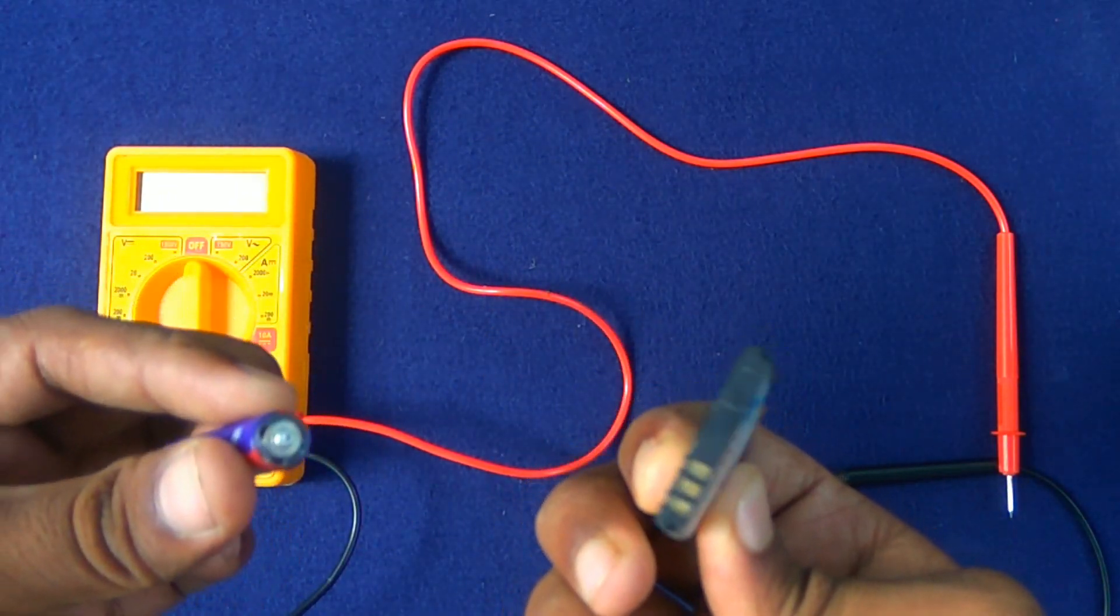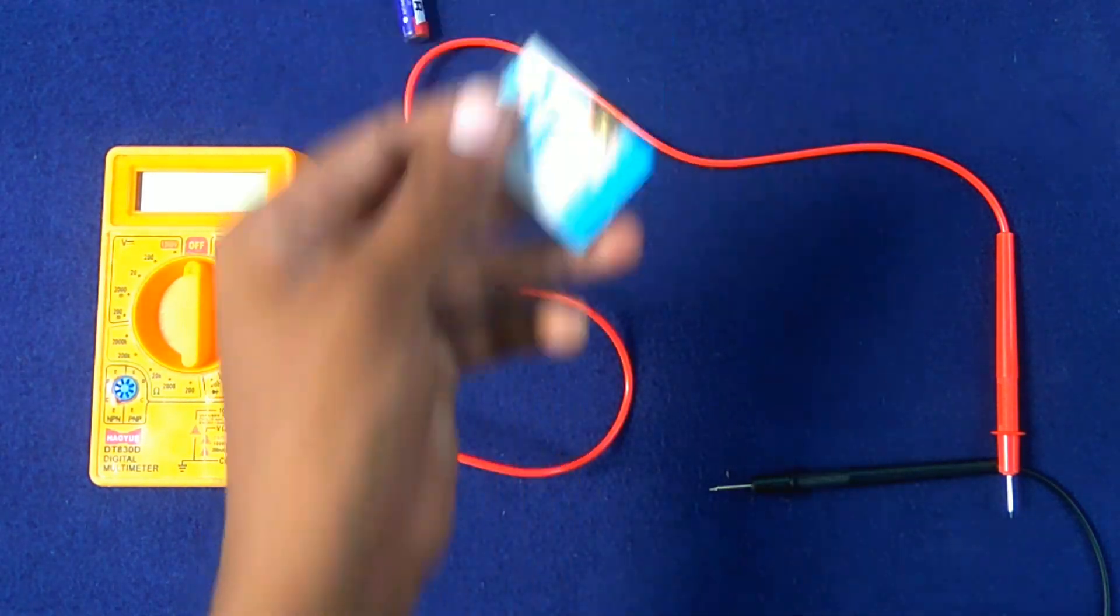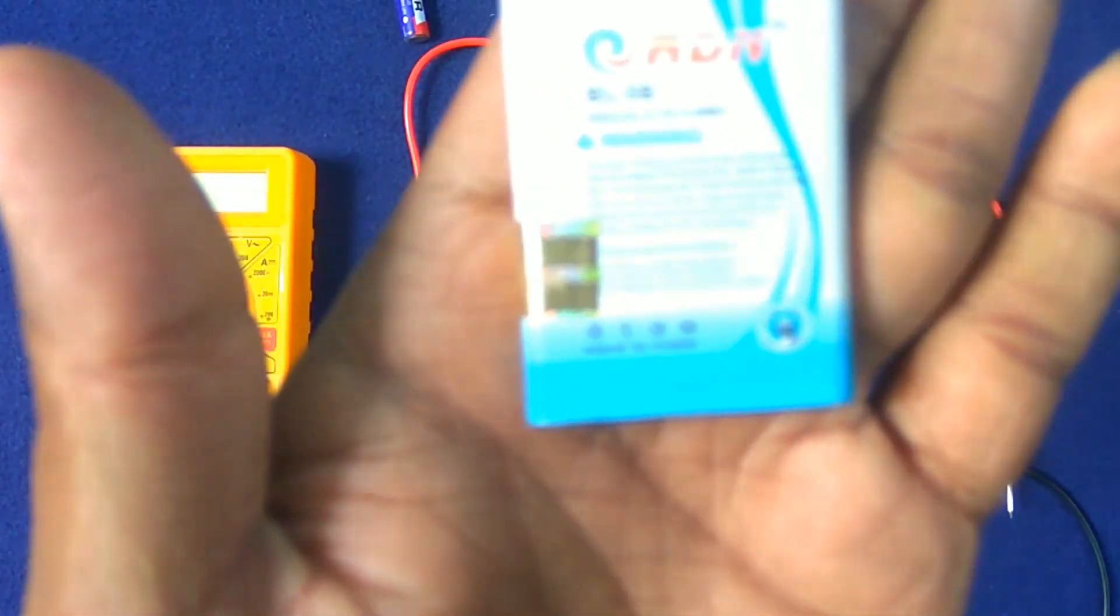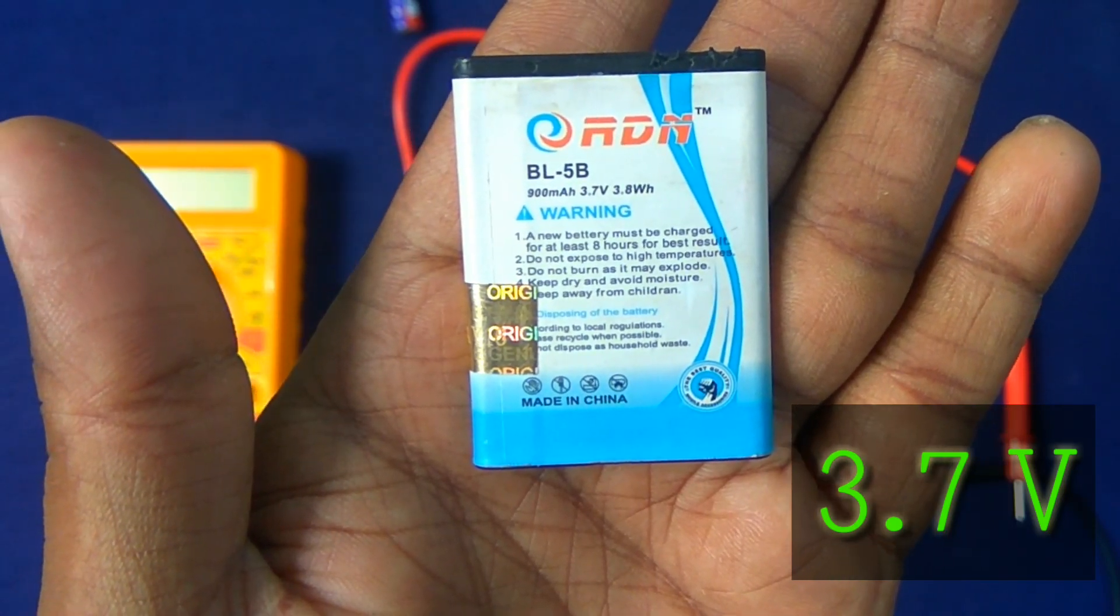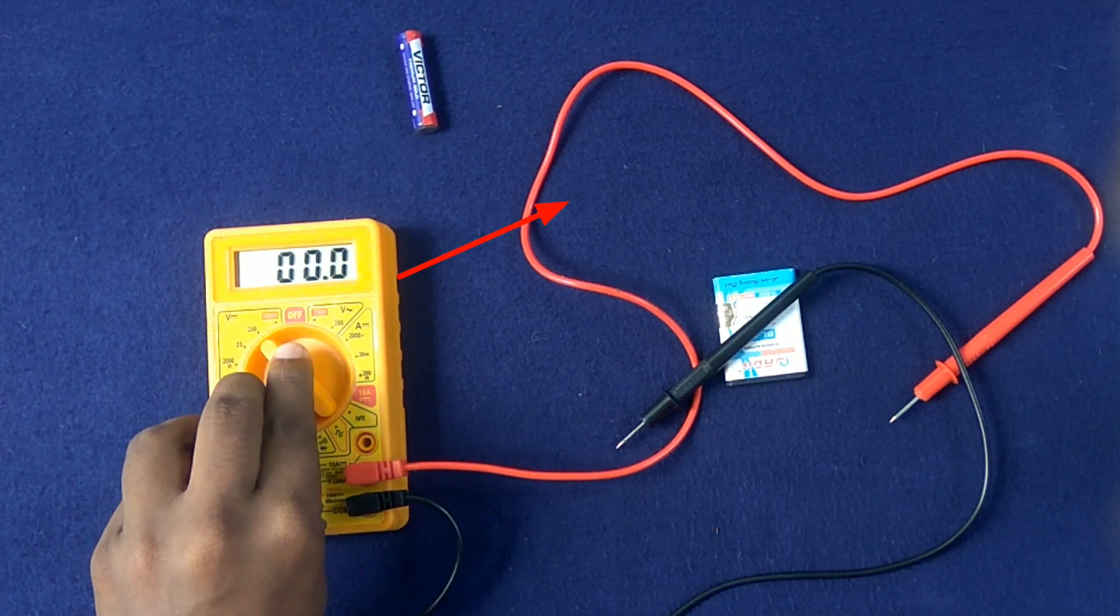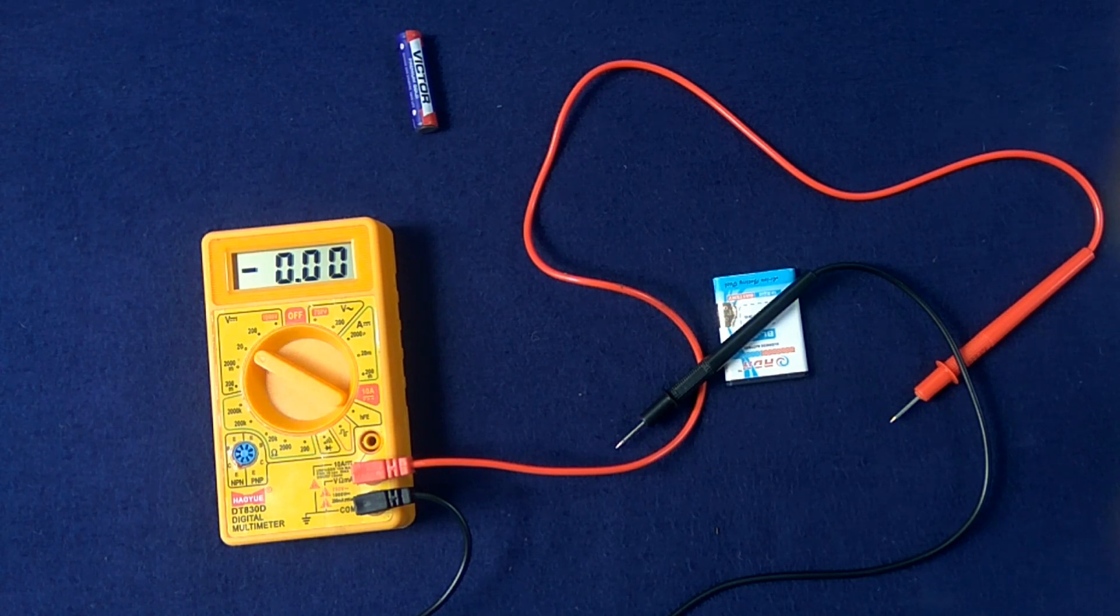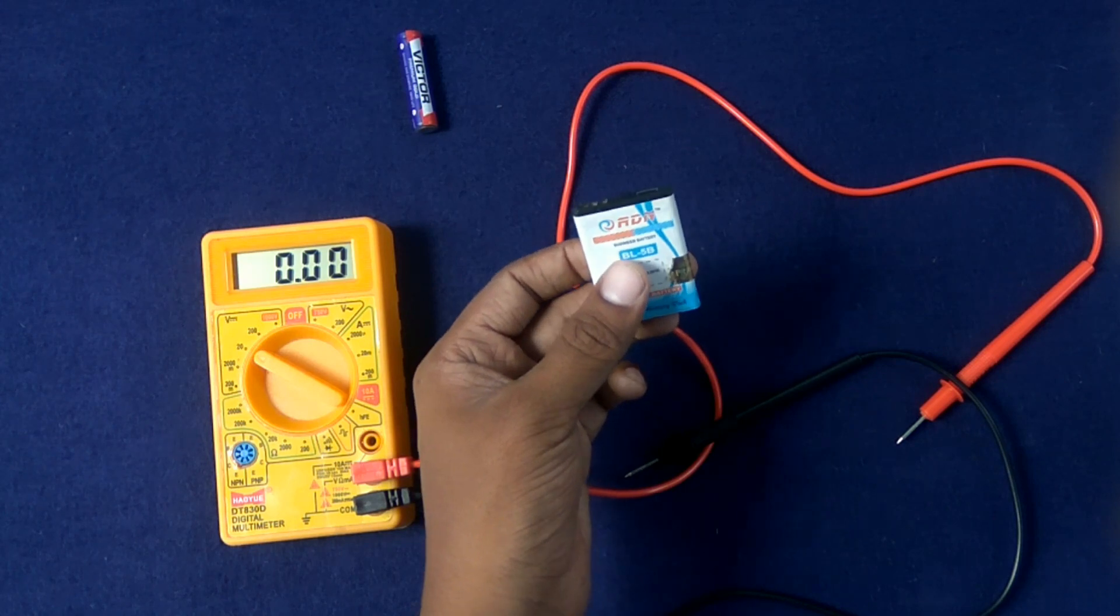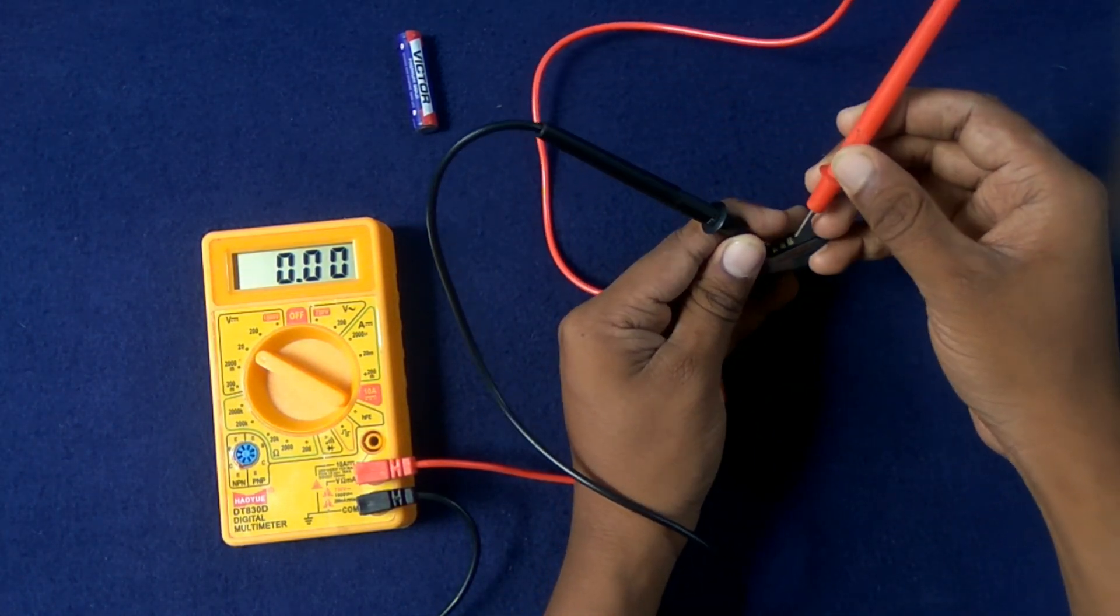Let's test these two batteries. This battery says it gives an output of 3.7 volts. Let's check it out using the multimeter. Switch the knob to the required volts. I am testing a 3.7 volt battery, so I am switching this knob to 20 volts because 3.7 is below 20 volts.